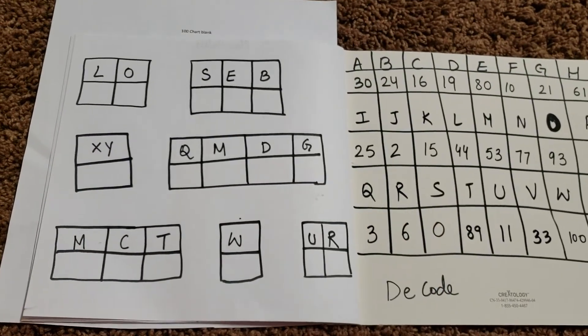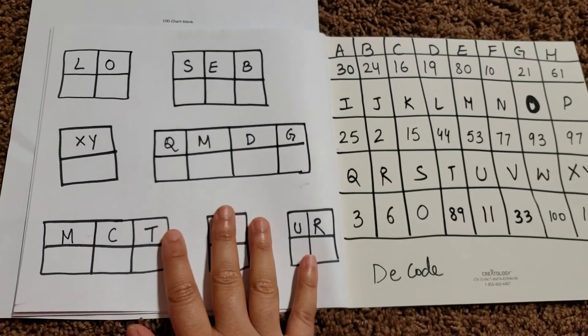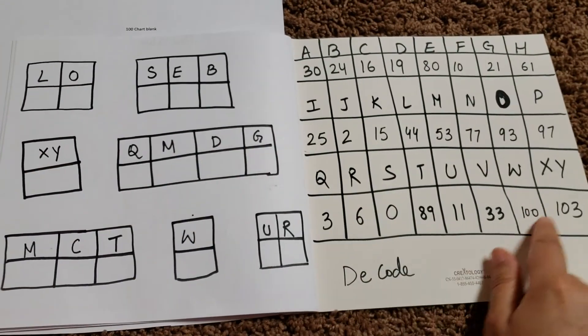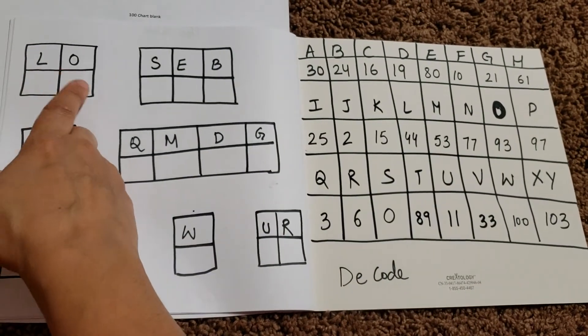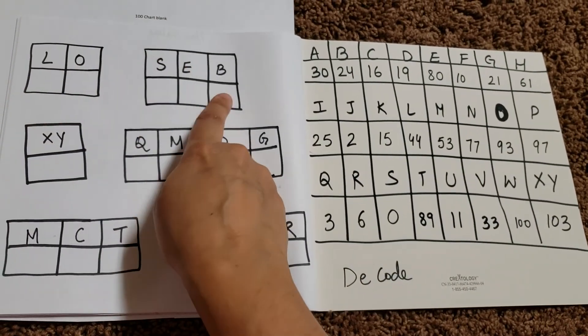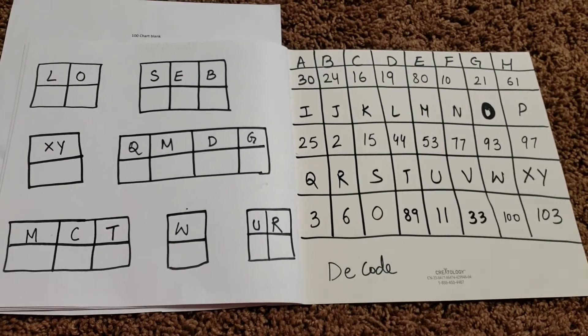And the last activity is he needs to just decode the numbers versus the code here. So it's L and O. He needs to find where is L and O. L is 44 and O is 93. He needs to write 44 and 93 here. Then he needs to like correspondingly find all the other numbers from here. And that is going to be the last activity.